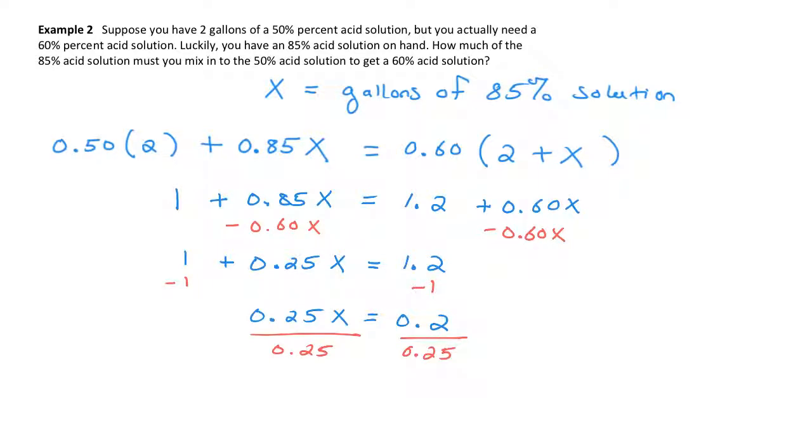0.2 divided by 0.25, and I get 0.8. And that's gallons. I have to pour in 0.8 gallons of this 85% acid solution into the 50% acid solution to increase it up to 60%.